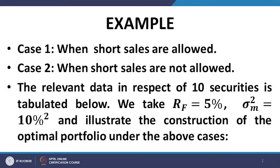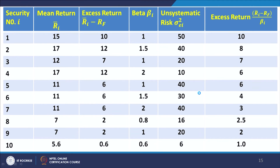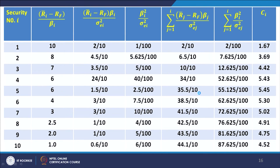Let us look at an example. Case 1 is when short sales are allowed. The relevant data for 10 securities is tabulated, with R_f = 5% and σ_m² = 10 percentage squared. We illustrate the construction of the optimal portfolio when short sales and risk-free lending and borrowing are both allowed. The given data covers columns 1 through 5, from which we can work out the excess return per unit of systematic risk and other expressions required for the calculation of C*.